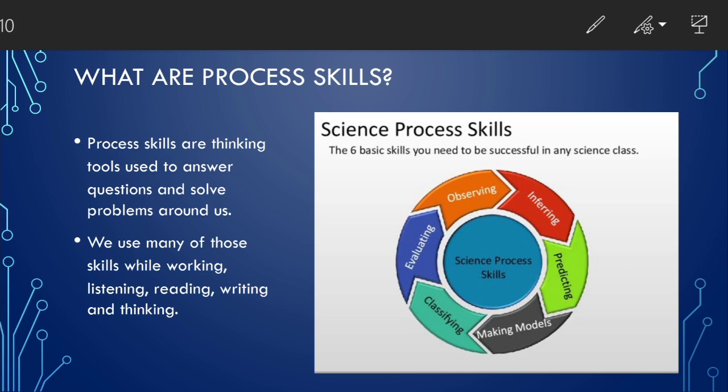First of all let us learn about what are process skills. These process skills are thinking tools used to answer questions and solve problems around us. We use many of those skills while working, listening, reading, writing and thinking. Because we are living with these process skills already happening in the brain. These process skills are also called as psychomotor skills, psychic skills, simply motor skills based on the work they do.